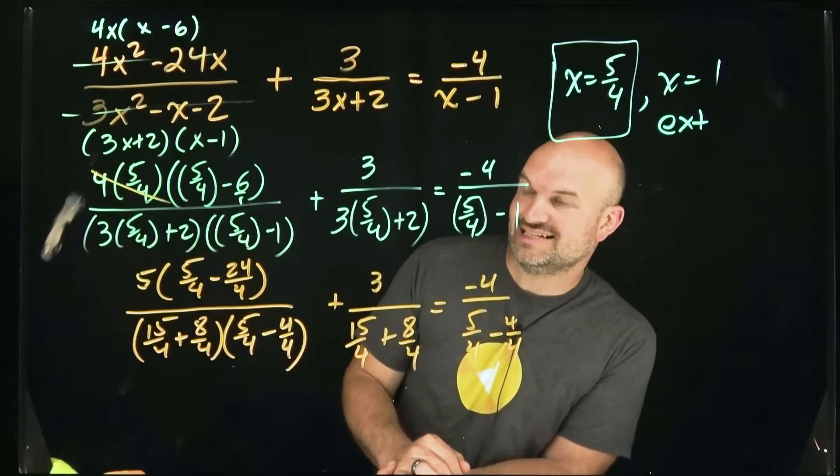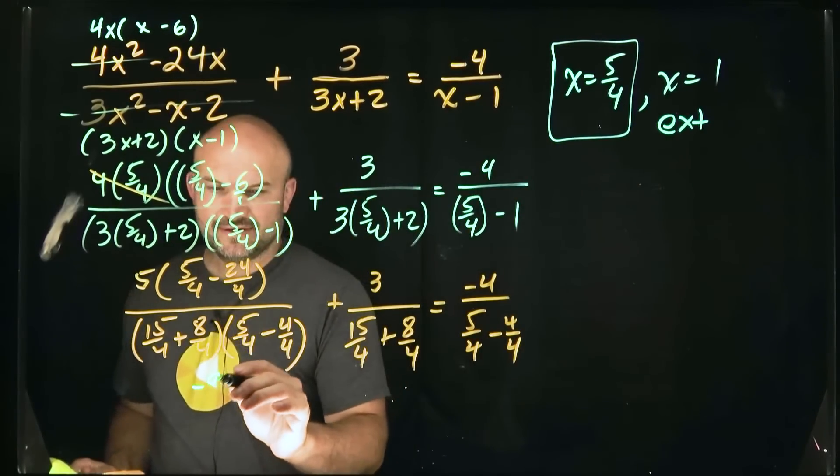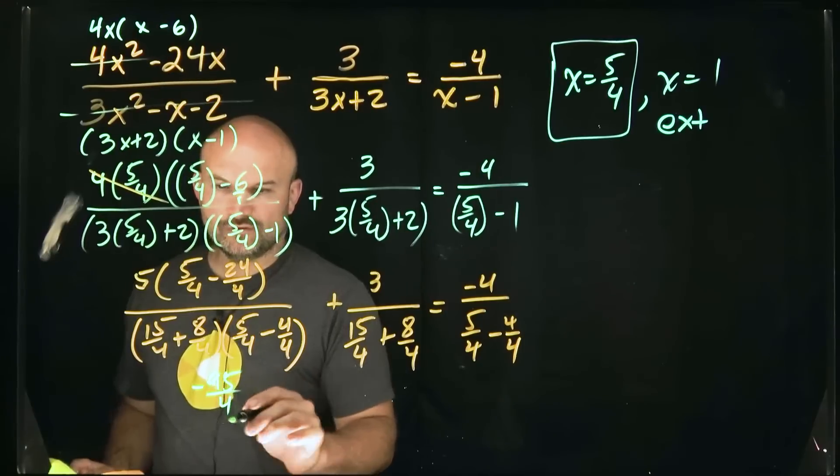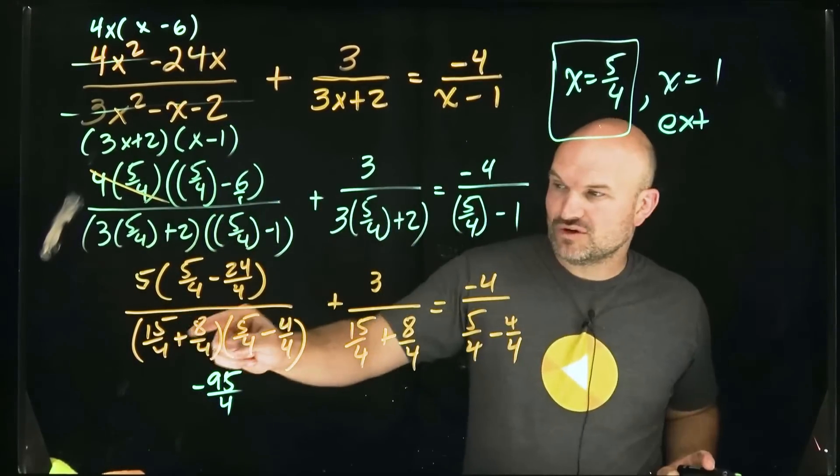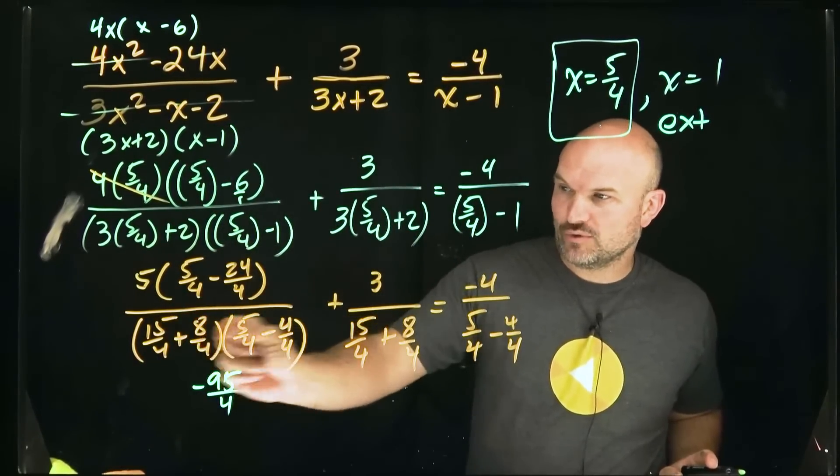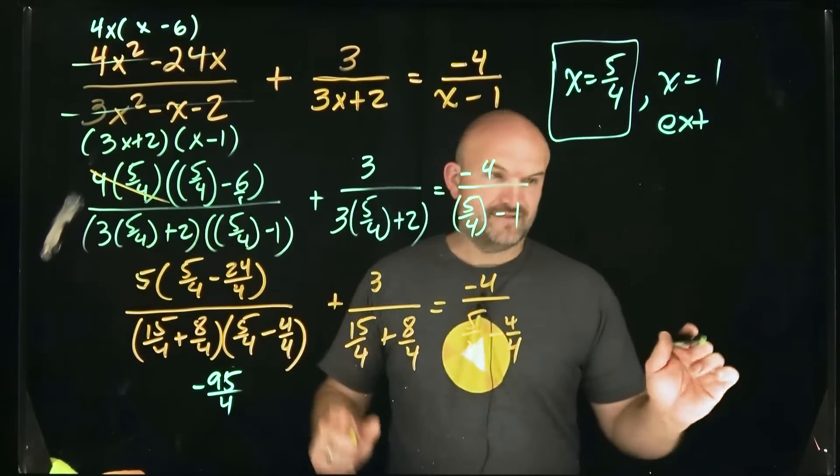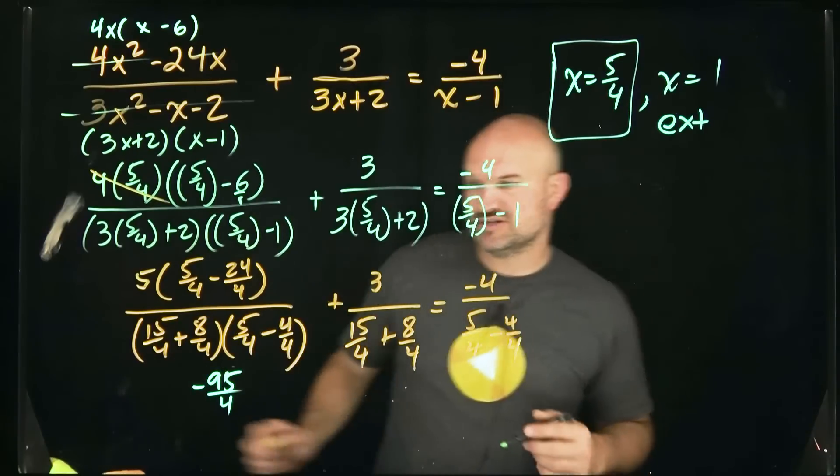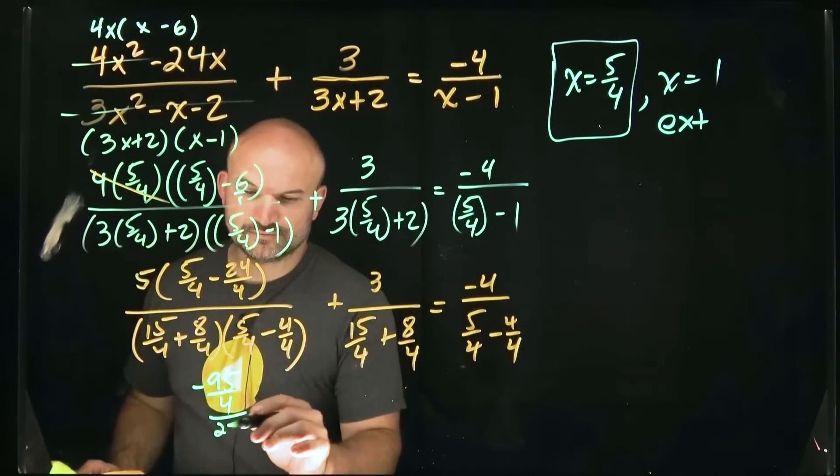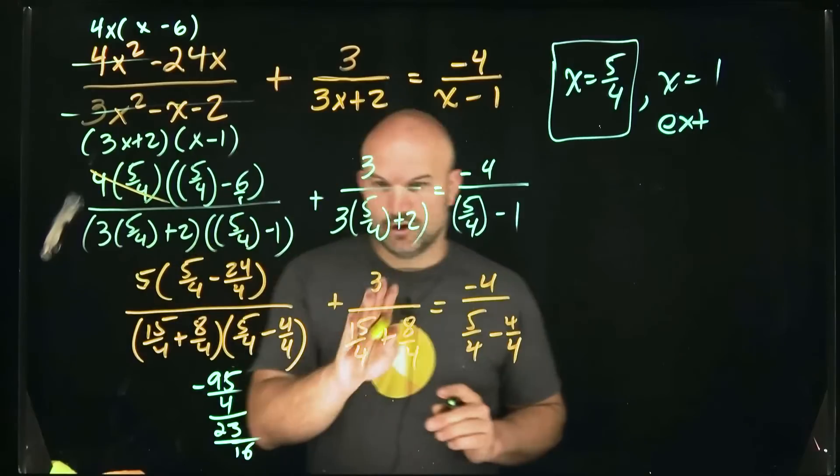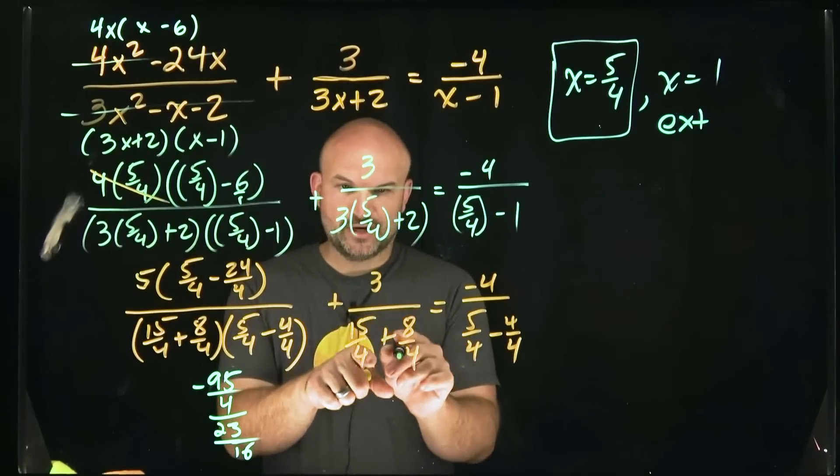Five times negative 19 is going to be negative 95. So I have negative 95 over four. Here I have 15 fourths plus eight fourths is going to be 23 fourths. And then five fourths minus one fourth is going to be one fourth. So I have 23 fourths times one fourth is going to be 23 over 16.